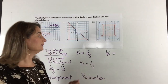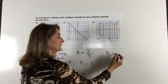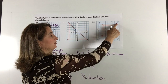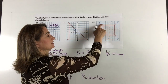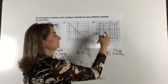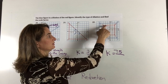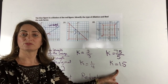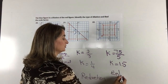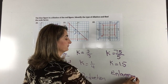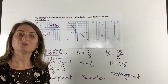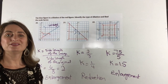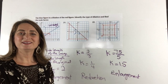For the last one, the image side JK prime measures 7.5, and the corresponding original side JK measures 5, so k equals 7.5 divided by 5, which is 1.5. The scale factor is 1.5, which means it's an enlargement. That's how you determine the type of dilation and find the scale factor. If you can prove it's a dilation, then the figures are similar. Thank you for watching — have a great day!